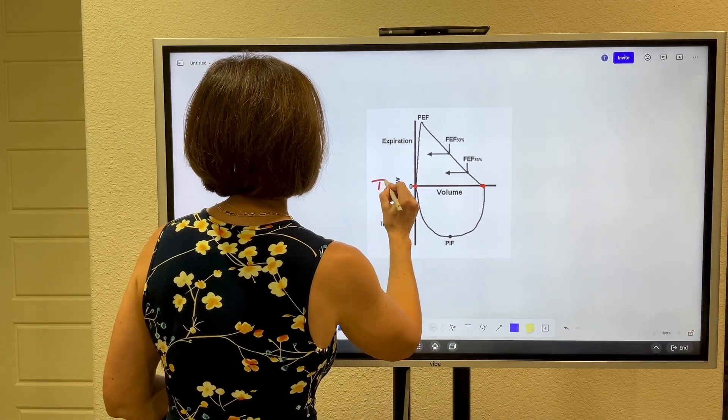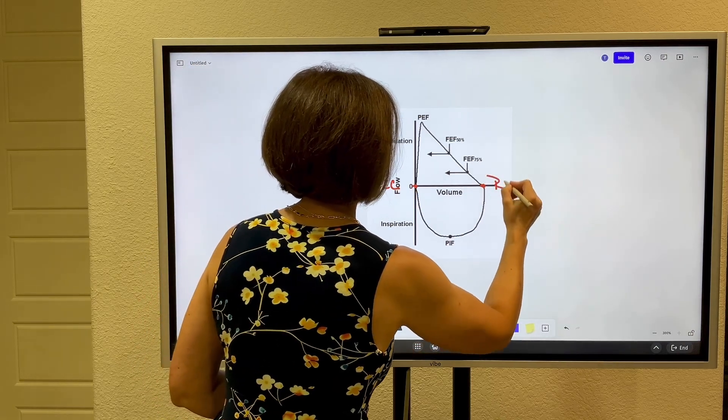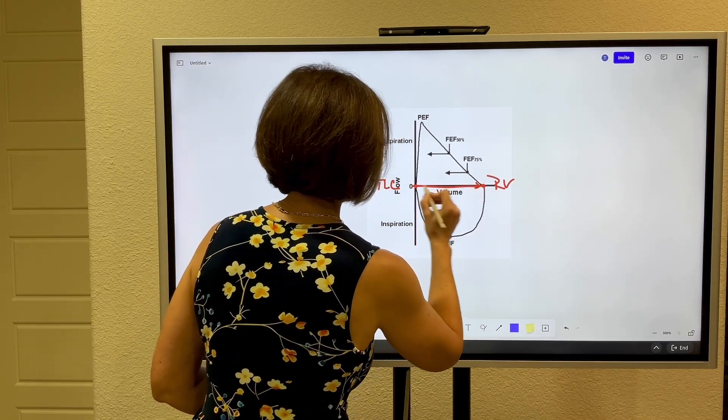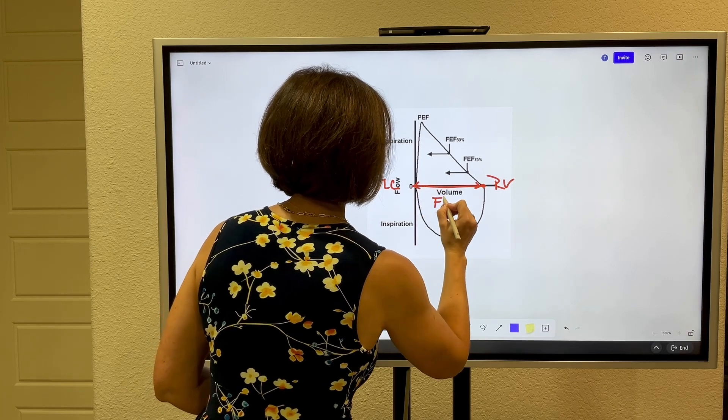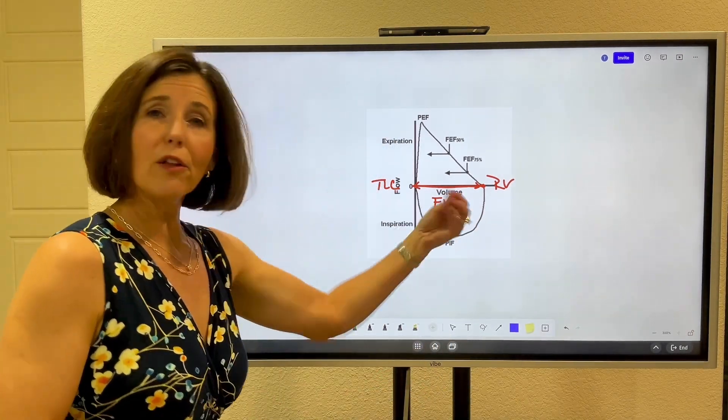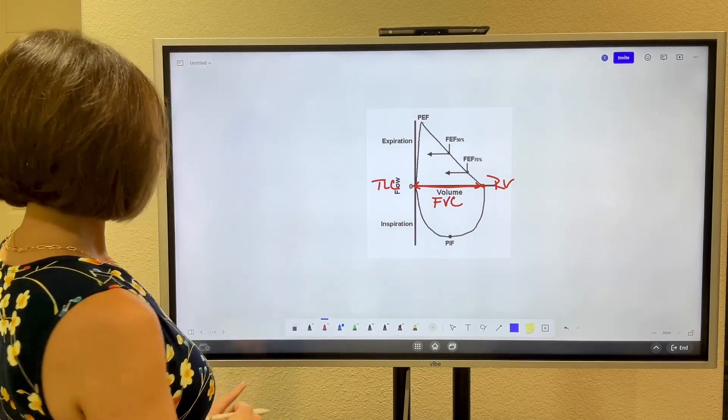So this is TLC. They blow down to RV and what they've blown out this area right here is the forced vital capacity. Those are all the volumes that this is showing.